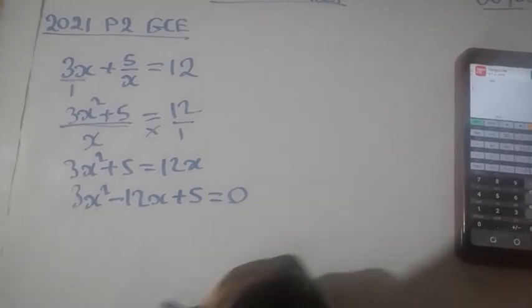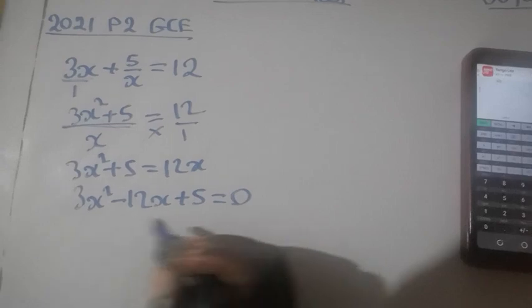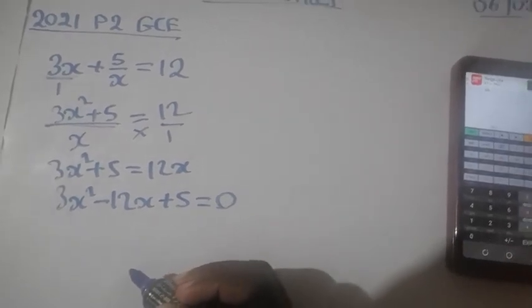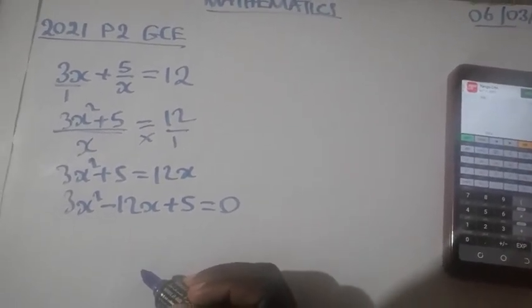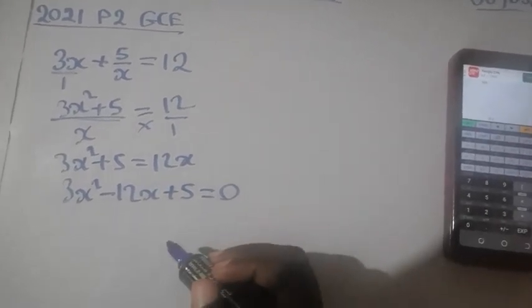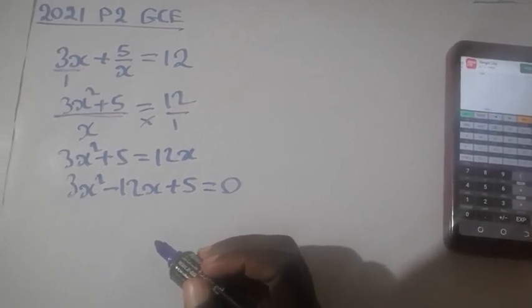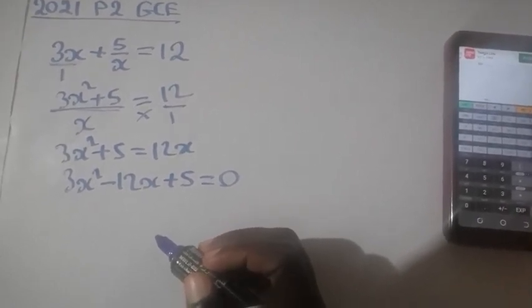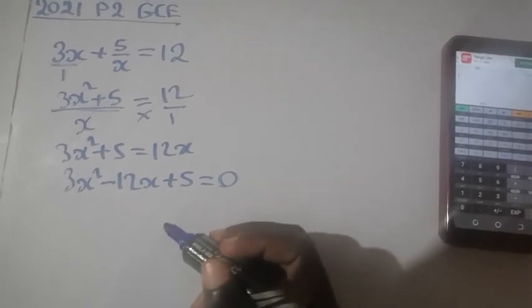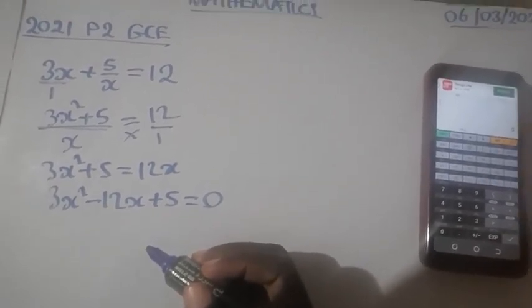This is now the quadratic equation we are looking for. At this stage we can apply the 0 product rule. So to solve this equation, we can apply completing the square method or formula method or factorization.